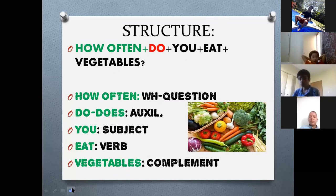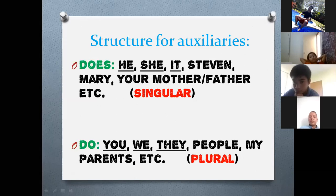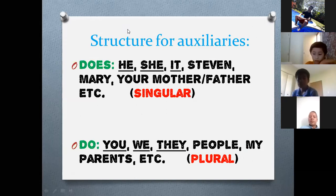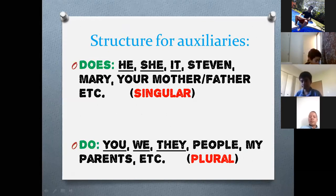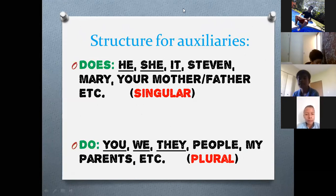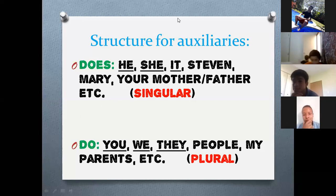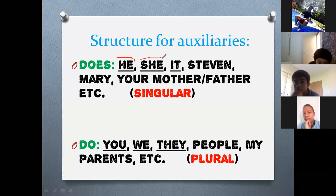Here is the structure about the auxiliaries. You have to copy this. The first auxiliary is 'does.' When do we use 'does'? When you are speaking about he, she, or it — or even a person's name. For example, 'Steven' — Steven is still 'he,' it's a man. And 'Mary' — Mary is a woman, so she uses 'does' as well.